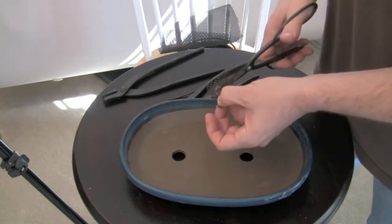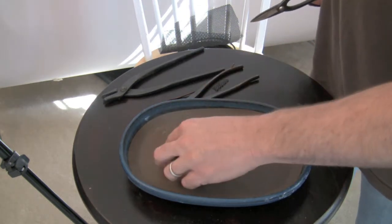All you're doing is basically take a piece of the mesh, just trim it to size, just a little bit larger than the hole.